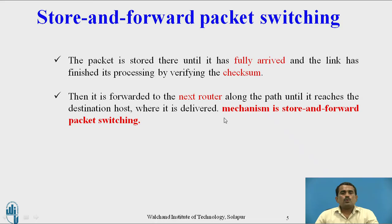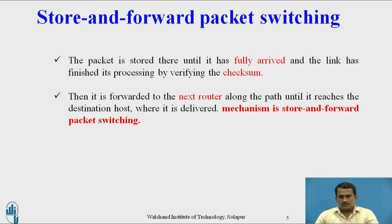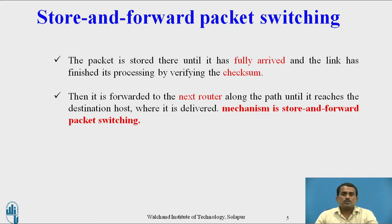For example, consider two stations: one transmitter and one receiver. If the transmitter has 10 packets to transfer, all 10 packets must first be received and stored at the intermediate machine. After receiving all 10 packets, then the data is forwarded to the next user. This concept is called store and forward packet switching.